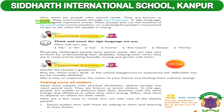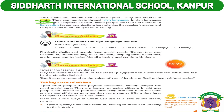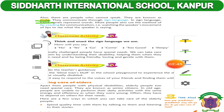Why do we call them mute? Because in your TV remote, children, you might have noticed there is an option known as the mute option. Mute means no sound — soundless. So people who cannot speak are known as mute.